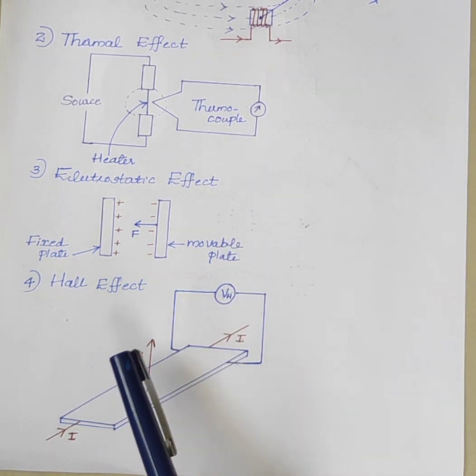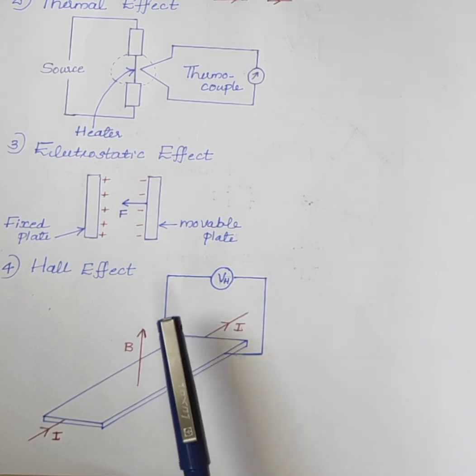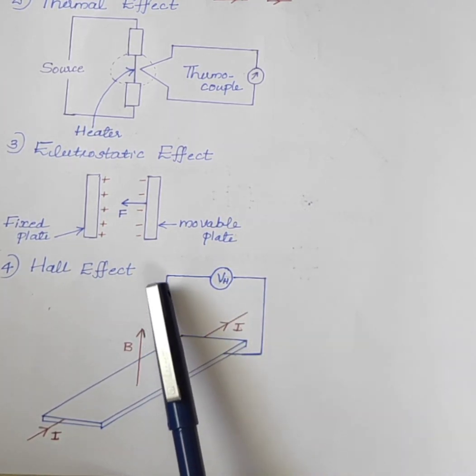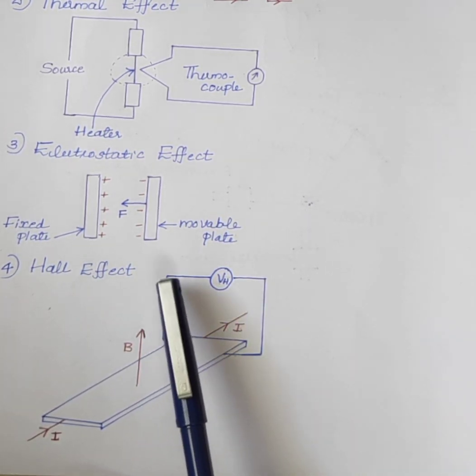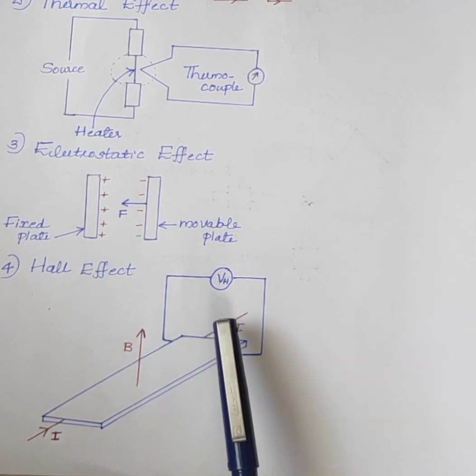The last one is the Hall effect. Hall effect means the production of potential difference, production of EMF across the electrical conductor.